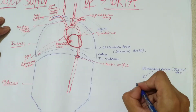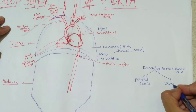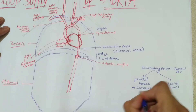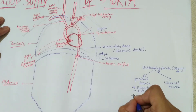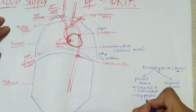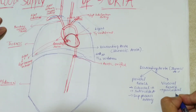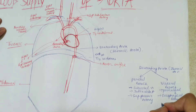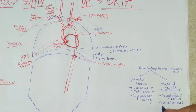The descending thoracic aorta has two types of branches: parietal branches and visceral branches. The parietal branches include the subcostal arteries, intercostal arteries, and superior phrenic artery. The visceral branches include the pericardial branch, esophageal branch, mediastinal branch, and bronchial branch.